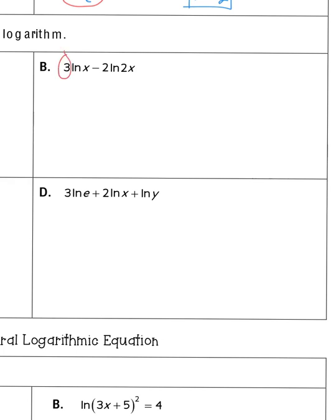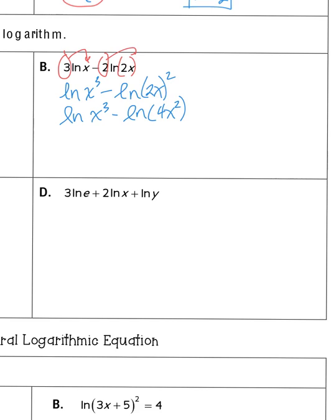For the next one, we loop the exponents up, remembering you're raising all of that to the second power. We get natural log of x to the third minus natural log of 2x squared. Because the 2 gets squared as well, we have natural log of x cubed minus natural log of 4x squared. Because we're subtracting, we divide: x cubed over 4x squared. The x squared cancels, giving a final answer of natural log of x over 4.